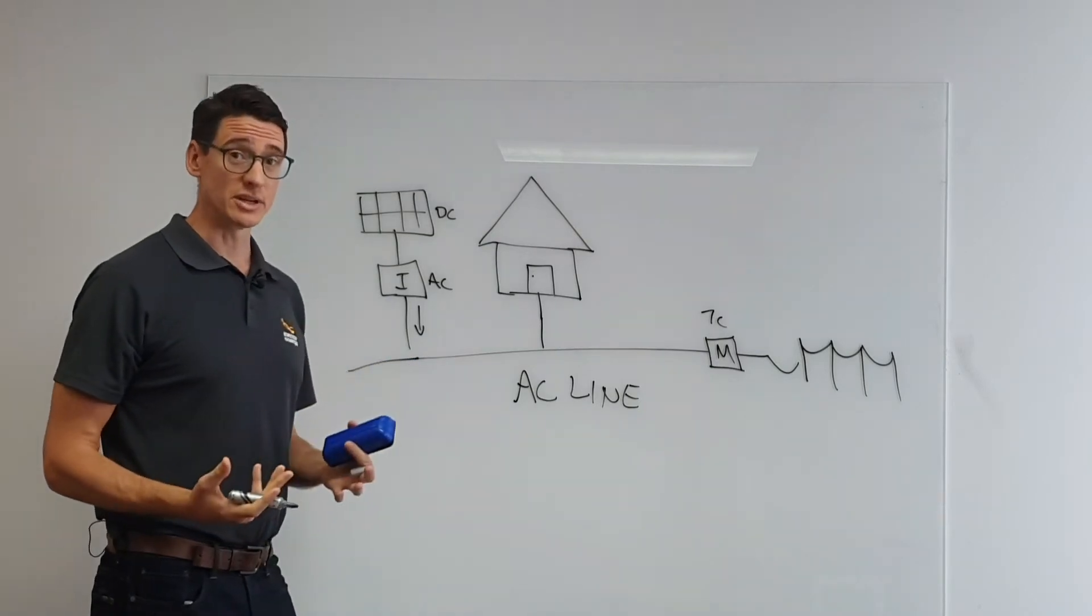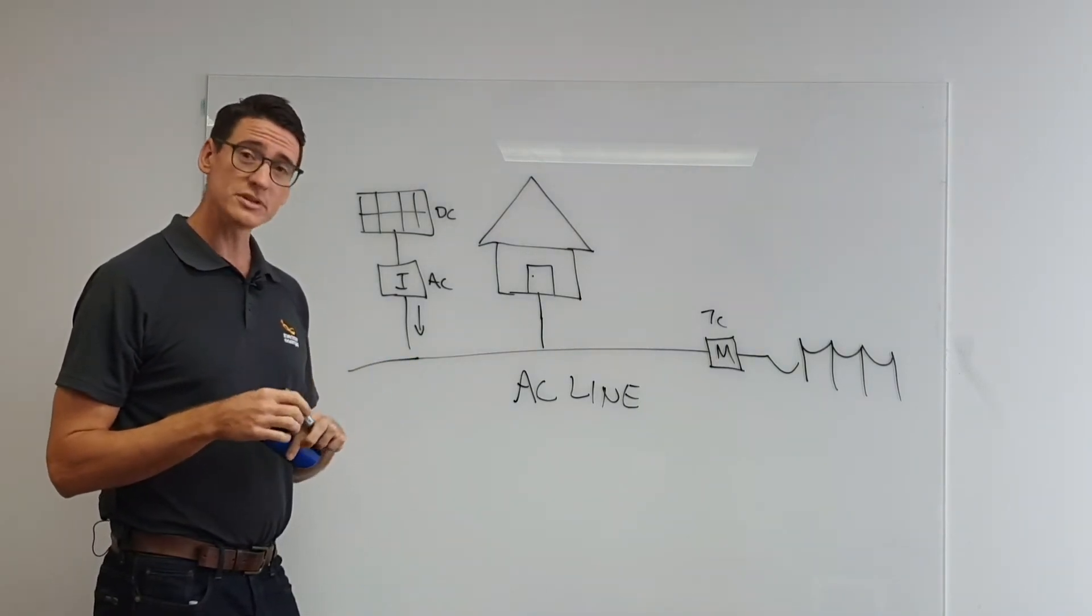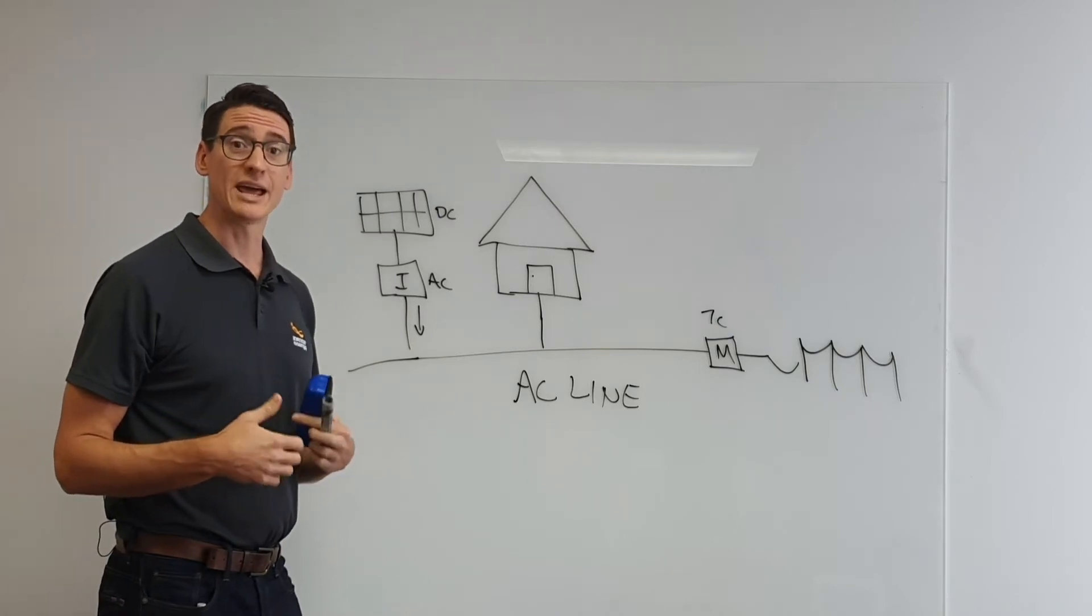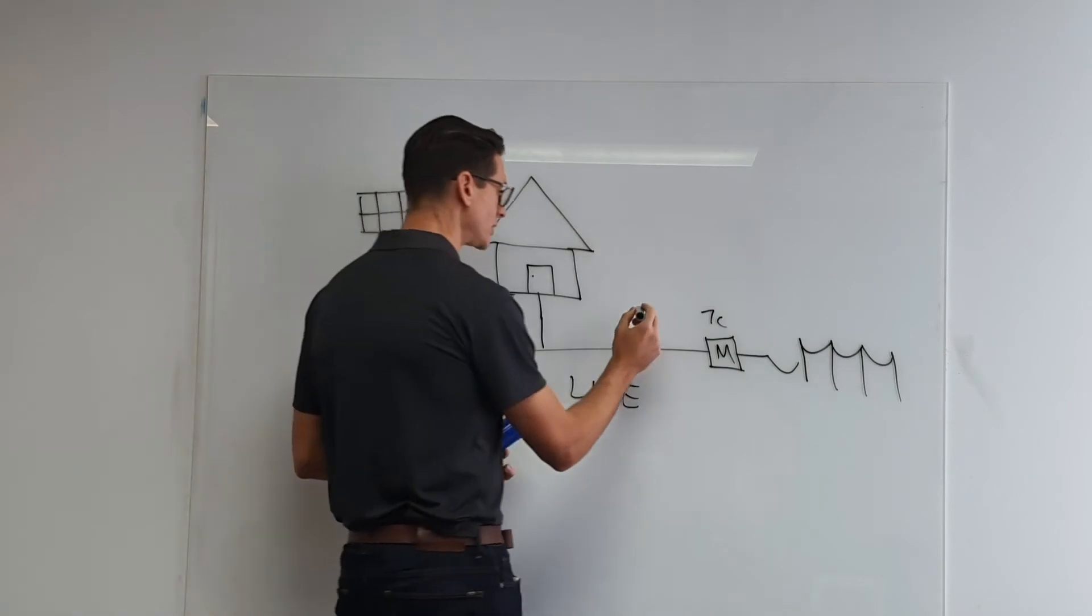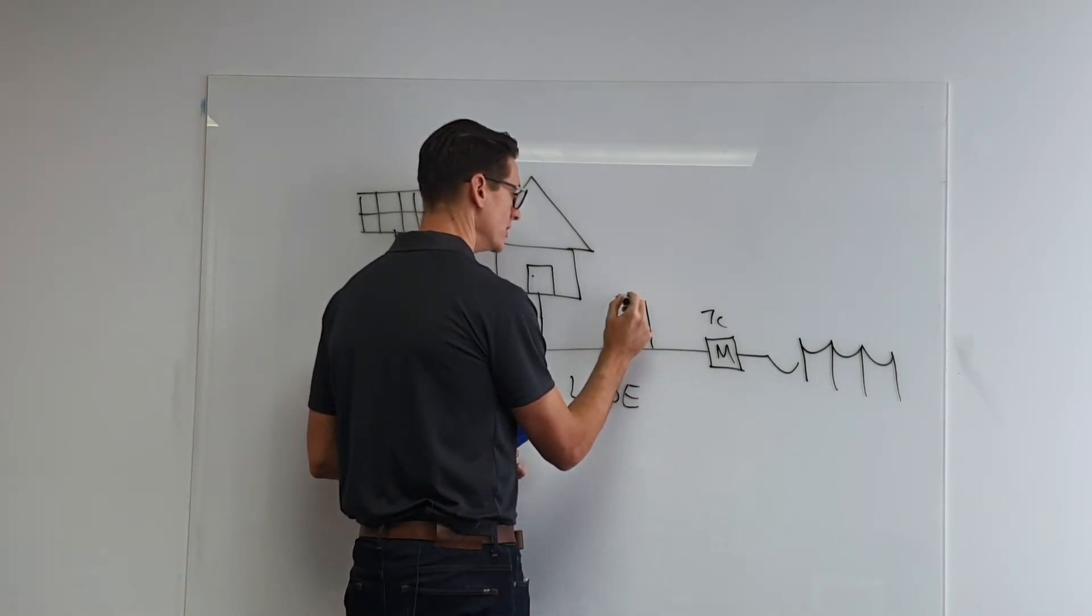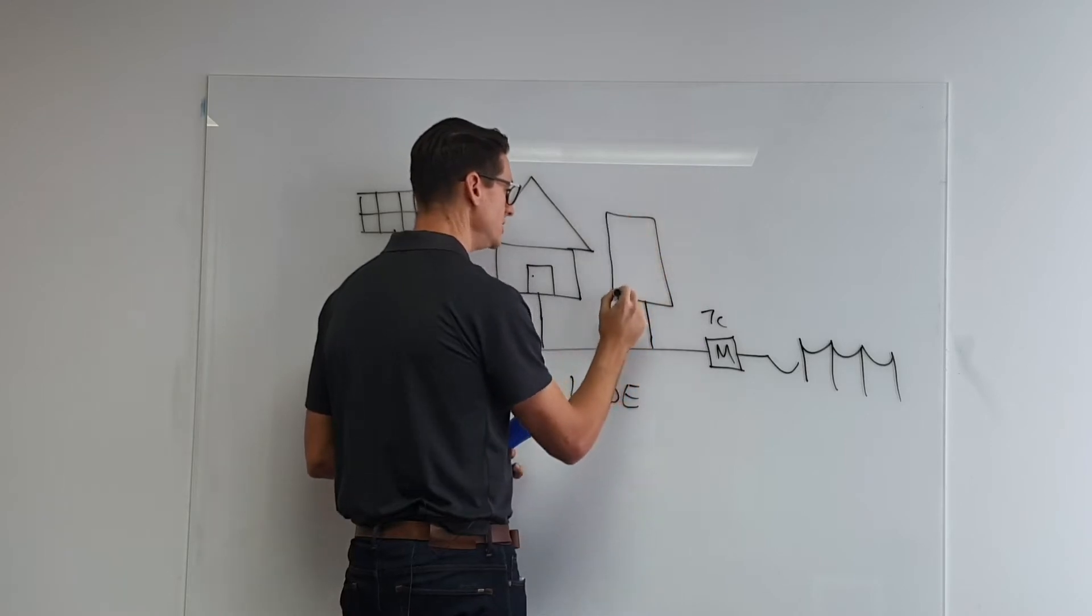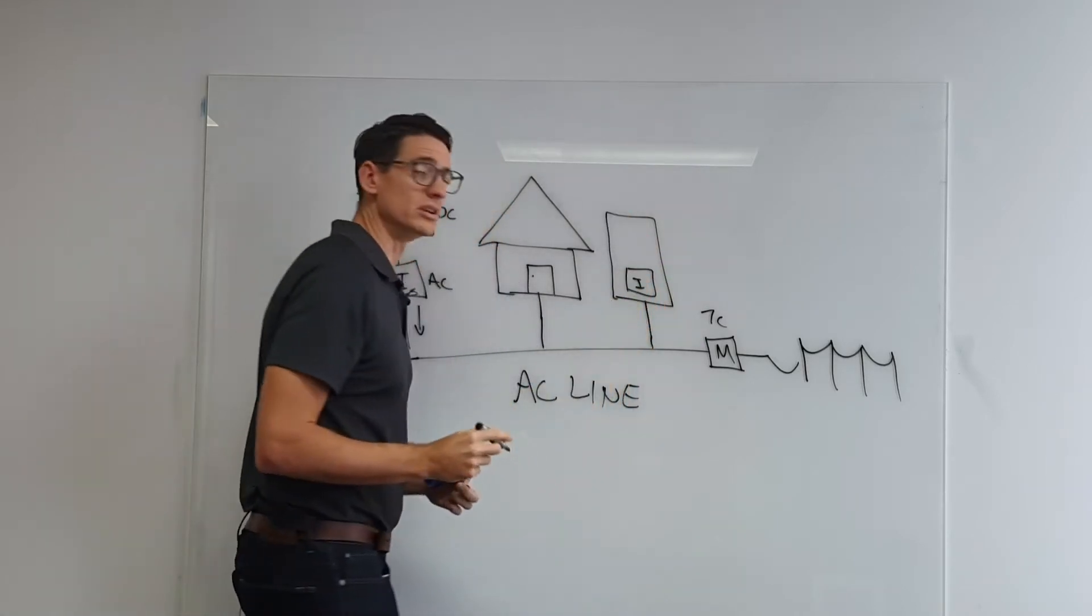Now the way battery connects, there's a few different types. So the most popular type out there is what we would call an AC couple. So an AC couple would connect in here. So you have your battery device, and then internal to that battery device is a small little inverter or little charge controller, however you want to call it.